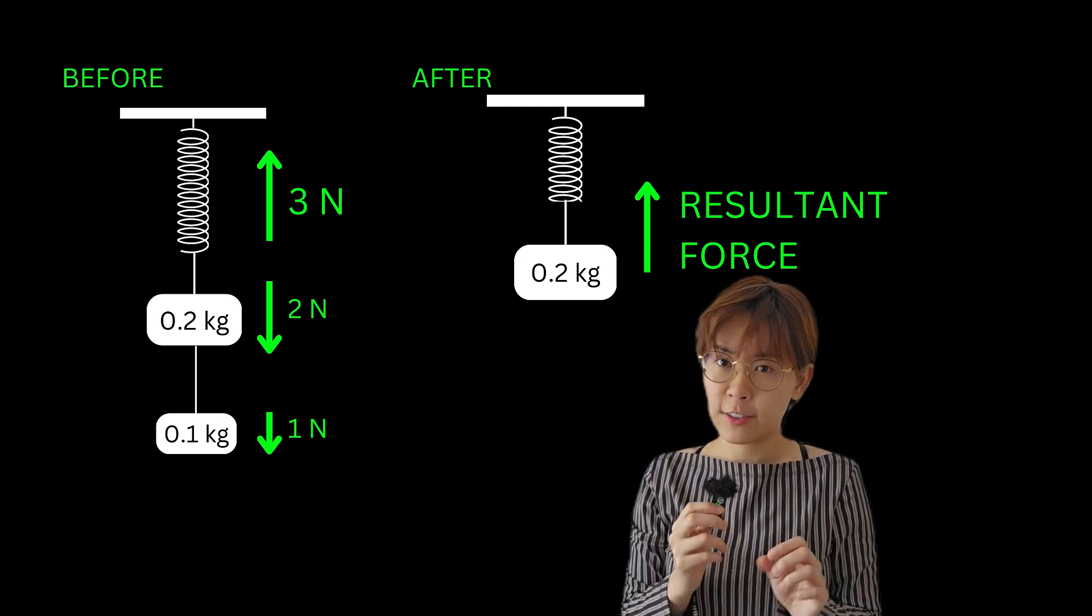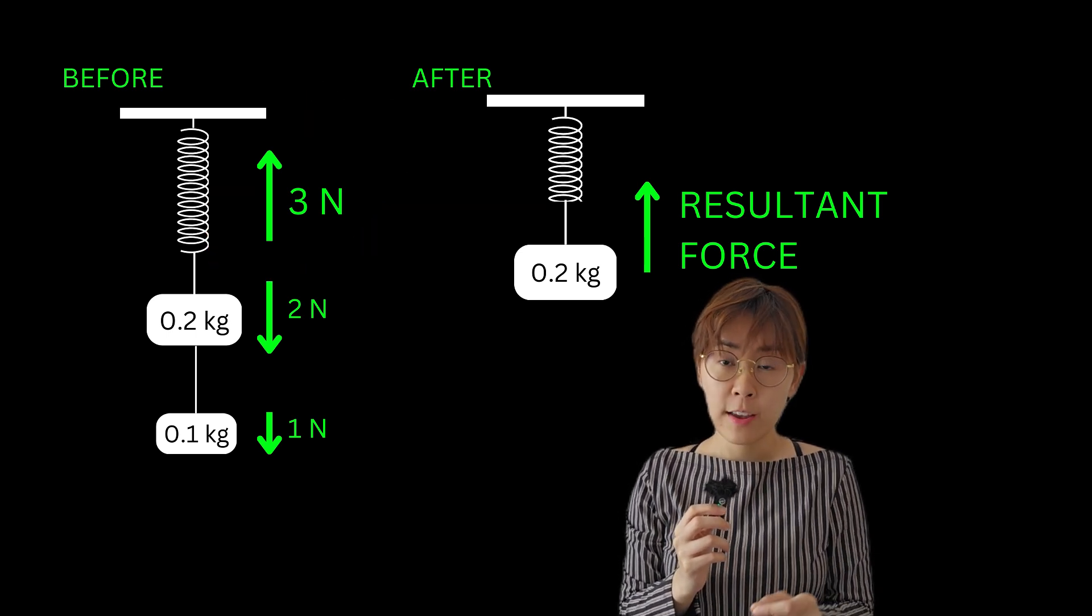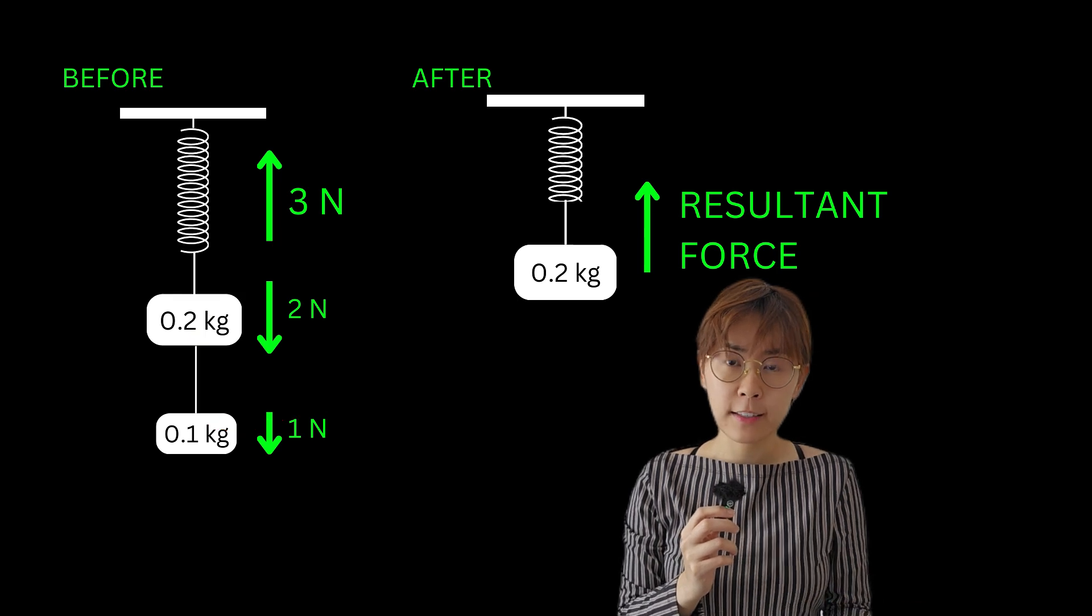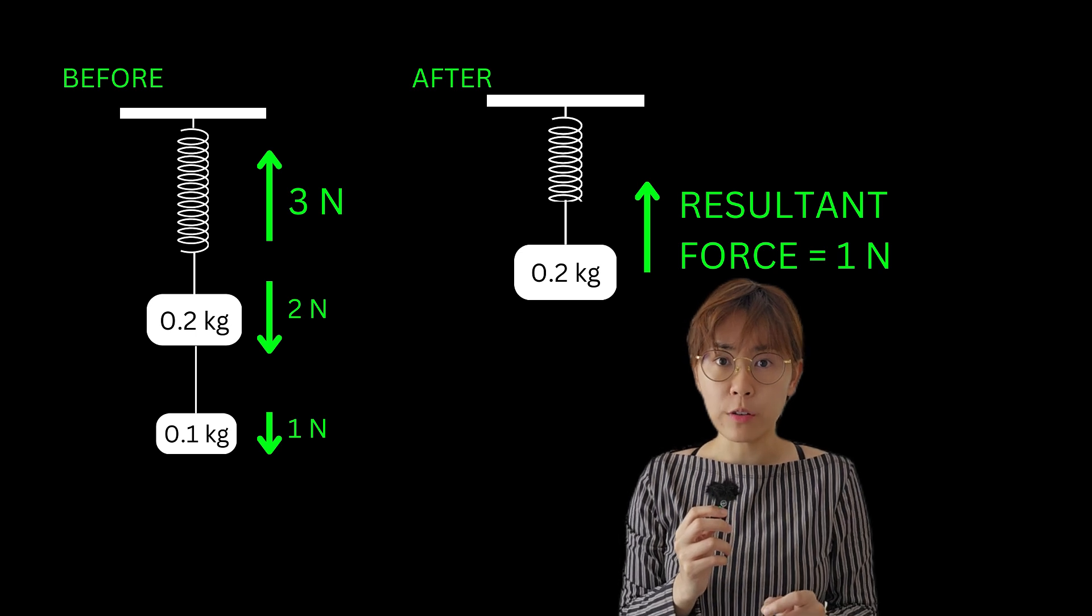The tension in the spring was 3 newtons, but now the only force pulling down is the weight of the remaining mass, which is 2 newtons. So the resultant force acting upwards is 1 newton.